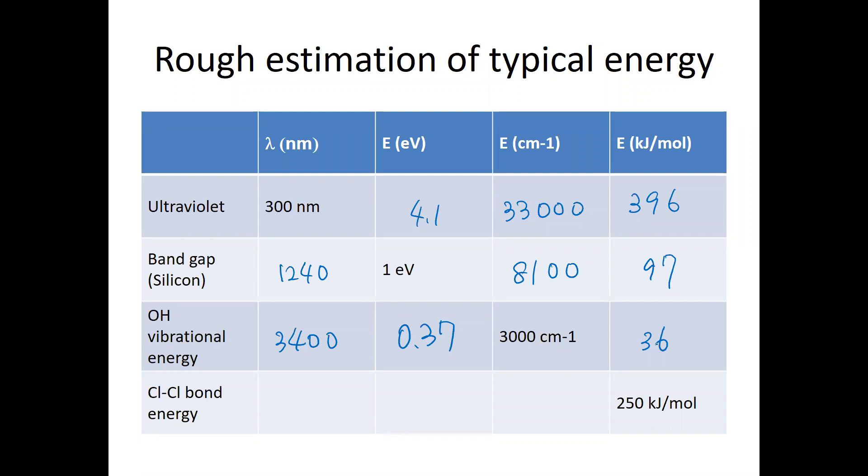And for about the C-C bond energy, first, this one converted to the electron volt, which is around 2.6 electron volt. And this energy corresponds to 480 nanometer, and corresponding to the 21,000 Kaiser. You could roughly guess how big or how small for each of the cases.